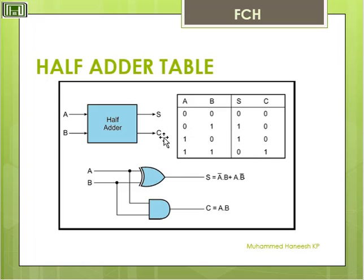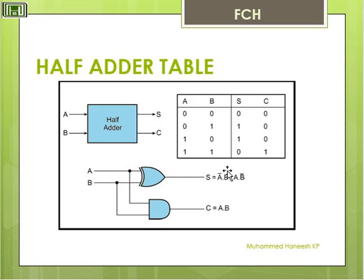This is the Half Adder table. We will do addition problems based on this table. This is 2 inputs A and B. This is the Half Adder circuit and we get the result Sum and Carry. S is equal to A-bar AND B, plus A AND B-bar. And Carry C is equal to A AND B. So this is about the Half Adder table.